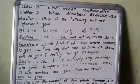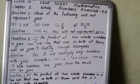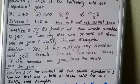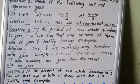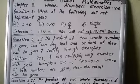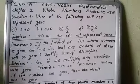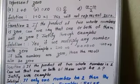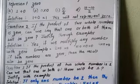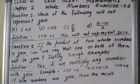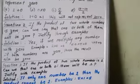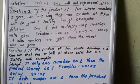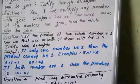The next question: If the product of two whole numbers is 1, can we say that one or both of them will be 1? Justify with examples. Now if the product of two whole numbers is 1, it is not possible because if only one number is 1, then the product cannot be 1. We will be getting the same answer: 4×1=4, 8×1=8. If both numbers are 1, then the product is 1. So we have to be very careful.